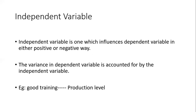Let us take the training and production level example again. The production level depends on the level of training. If we provide good training, the production level will increase. If training is moderate, production will be moderate. If we are not providing good training, the production level and efficiency of employees will reduce. So good training is the independent variable because it is responsible for the variance in the dependent variable, which is the production level.